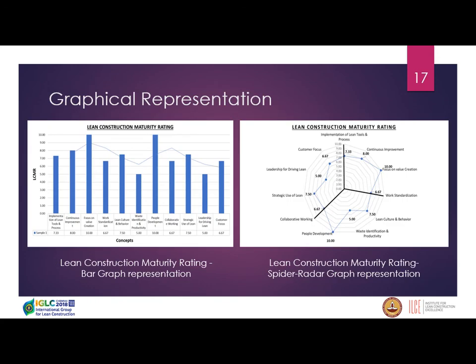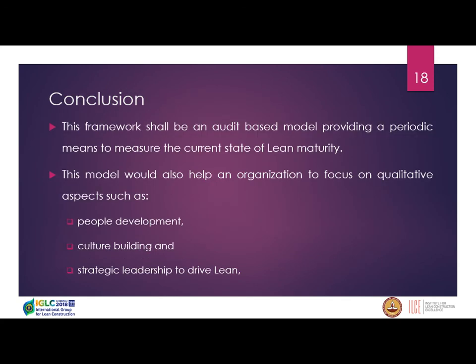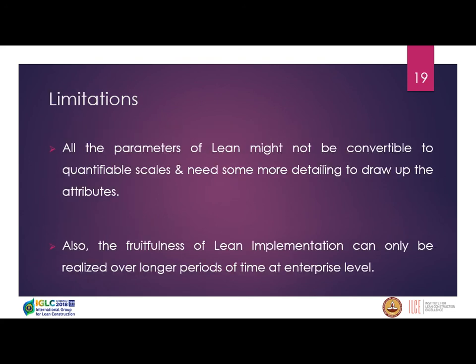A spider web graphical representation provides easy visibility of where the organization stands. The framework should be audit-based, conducted on a regular basis — quarterly or half-yearly. It includes parameters like people development, culture building, and strategy alongside tools. A limitation is that not all lean processes can be converted to a quantifiable binary yes/no scale. Another limitation is that the fruitfulness of lean implementation cannot be realized in the short term — it must be observed over longer periods.